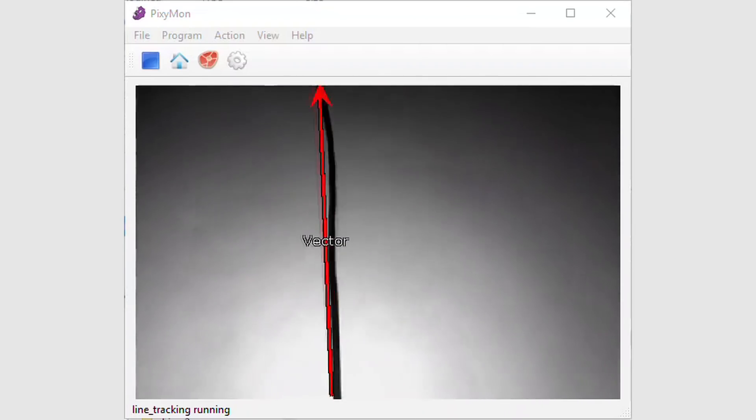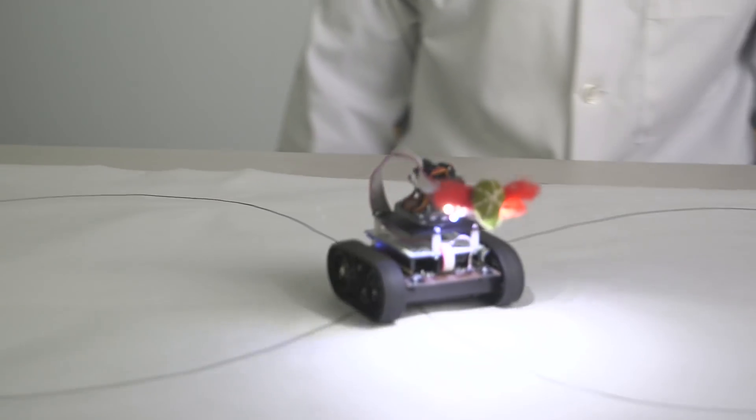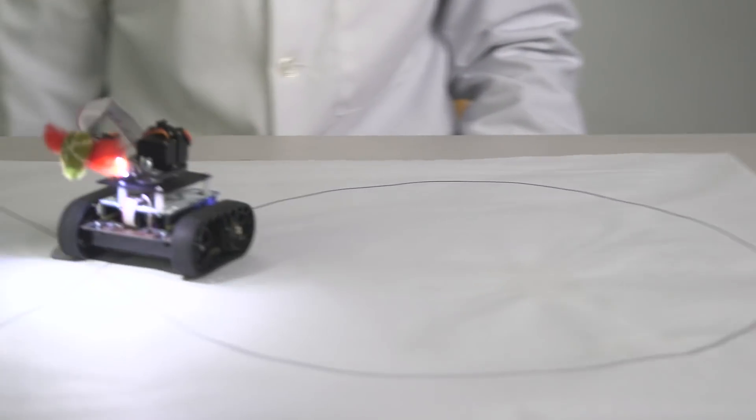New algorithms can identify intersections in your robot's path and report them. Your program can decide which path to take.